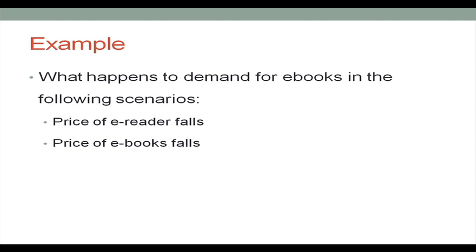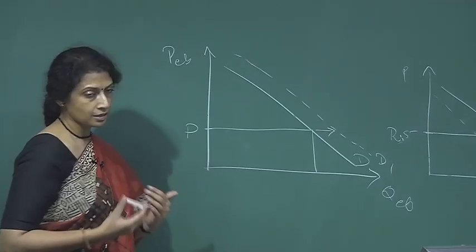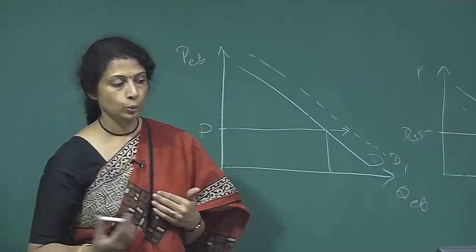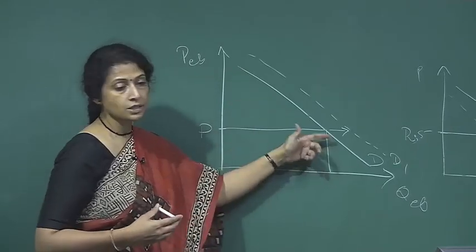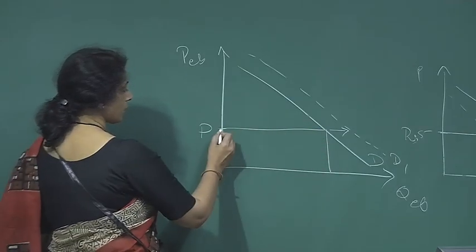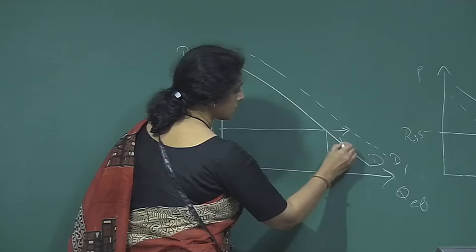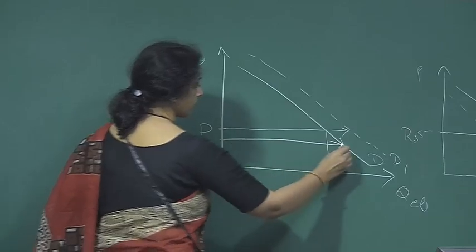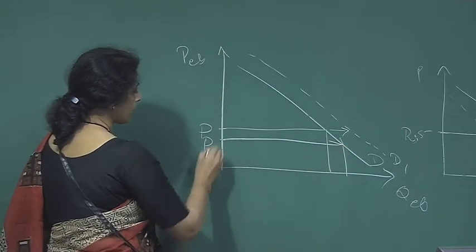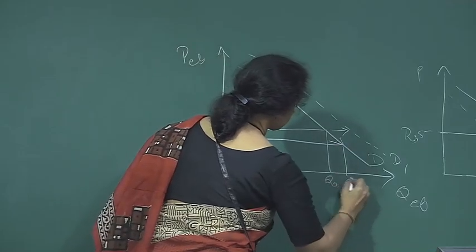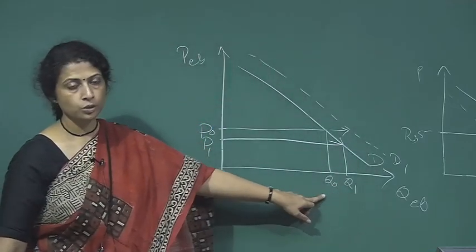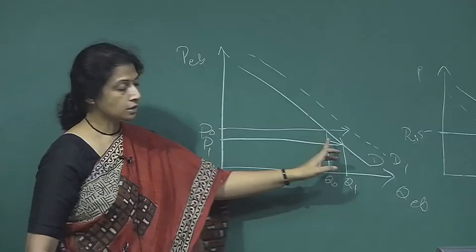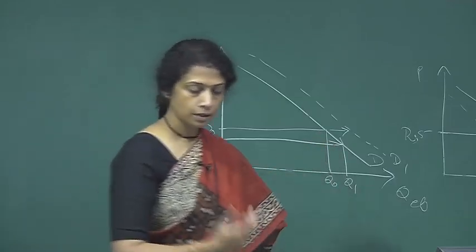Second, say the price of e-books themselves falls. Does the demand curve shift? No — because the price has changed, movement is along the demand curve, not a shift of it. If the existing price falls to a new lower price p1, the new quantity q1 is more than the earlier quantity. So when the price of e-books falls, movement is along the demand curve and total quantity demanded goes up.